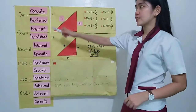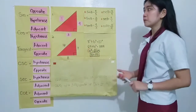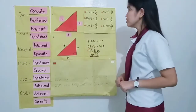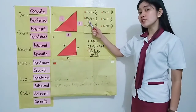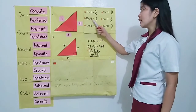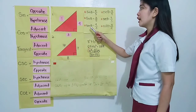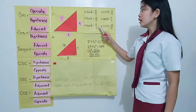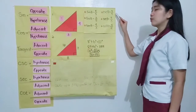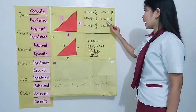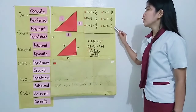As you can see here with the formula: sine θ = 4/5, cosine θ = 3/5 because it is adjacent over hypotenuse, tangent θ = 4/3, cosecant θ = 5/4, secant θ = 5/3, and cotangent θ = 3/4.